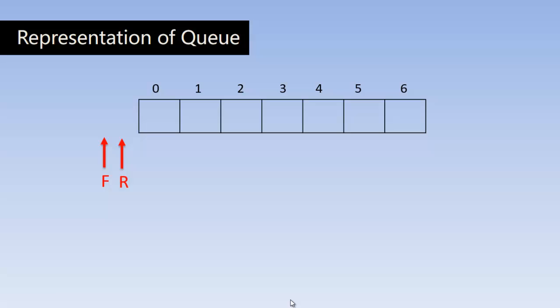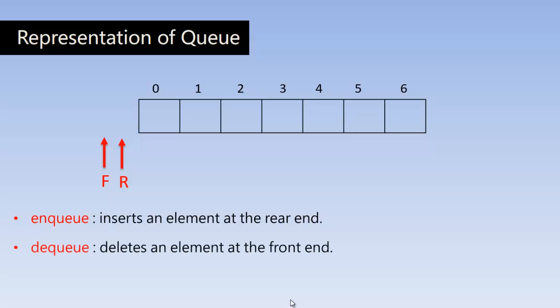And there are two major operations in the queue. One is enqueue, which inserts an element at the rear end. Another one is dequeue, which deletes an element at the front end. So using these operations we can insert and delete the elements.